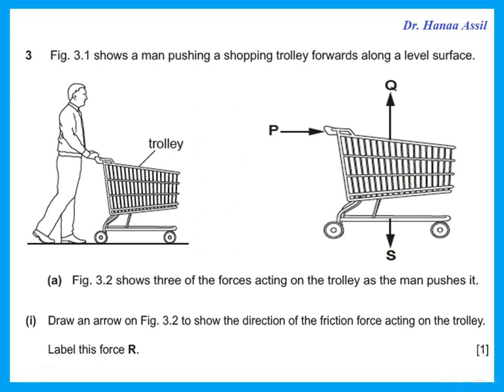Figure 3-1 shows a man pushing a shopping trolley forward along a level surface. Figure 3-2 shows three of the forces acting on the trolley. Draw an arrow to show the direction of the friction force and label it R. Friction is a force in the opposite direction to movement. So if the trolley is moving towards the right (that's P), then the friction R will be in the opposite direction.